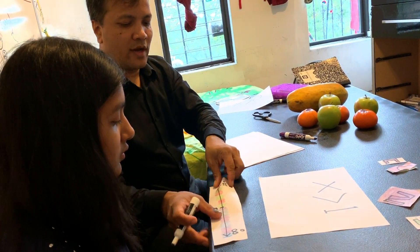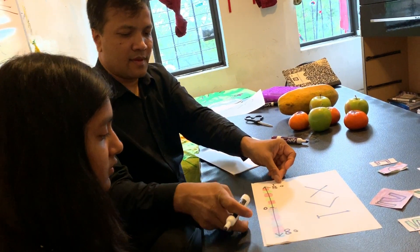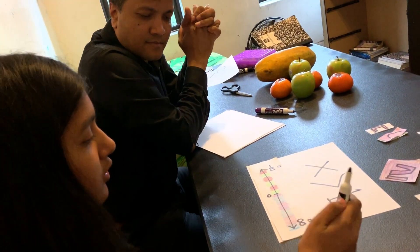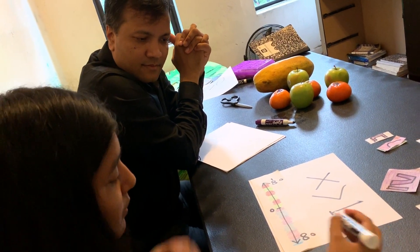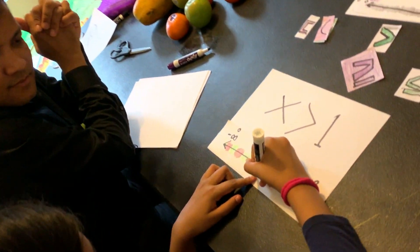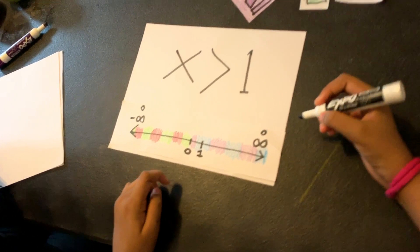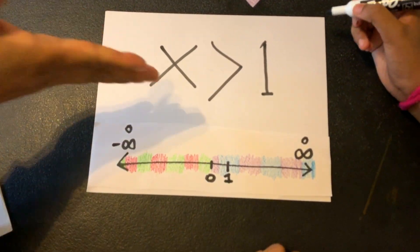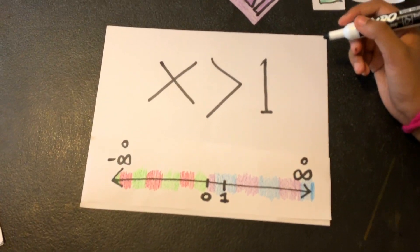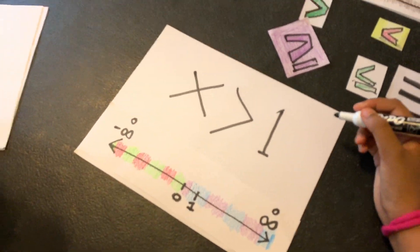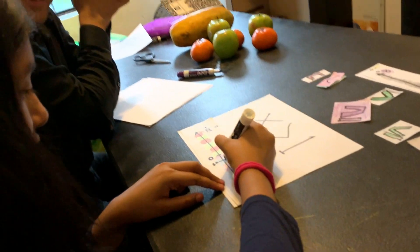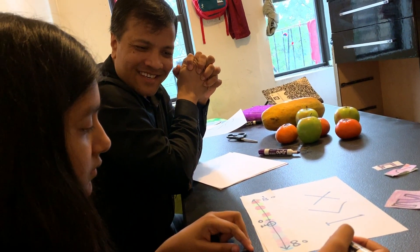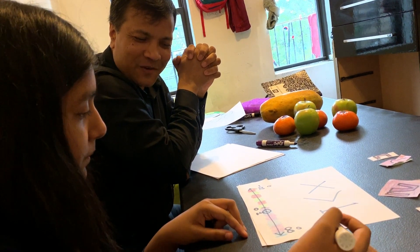All right, draw it on this number line. Good luck. Okay, I know one is in the positive, so let's put one right there. Now if we shade it in, is it open circle or closed circle? It's open. Okay, how do you draw open? Very nice. Is it to the right side or to the left?